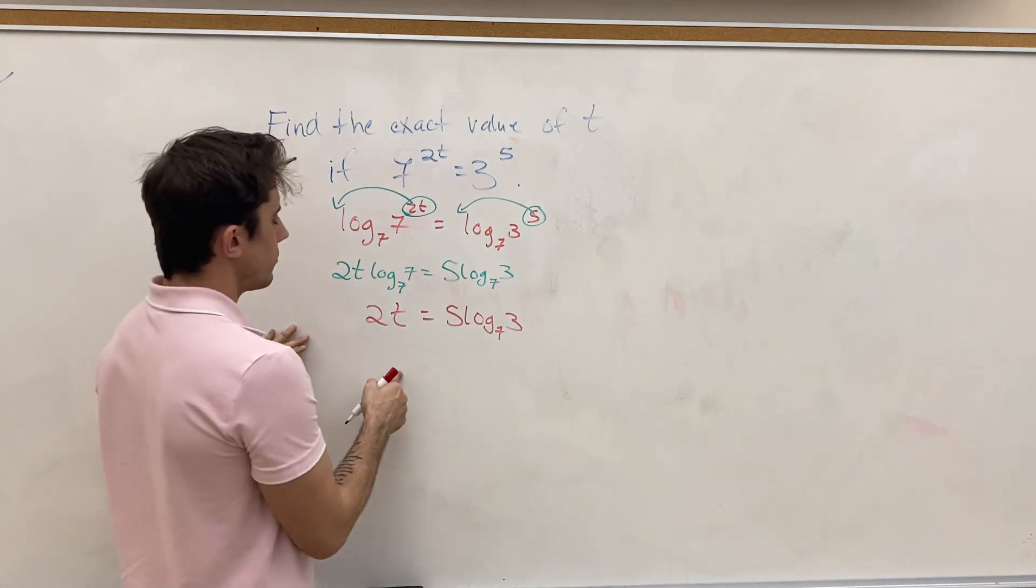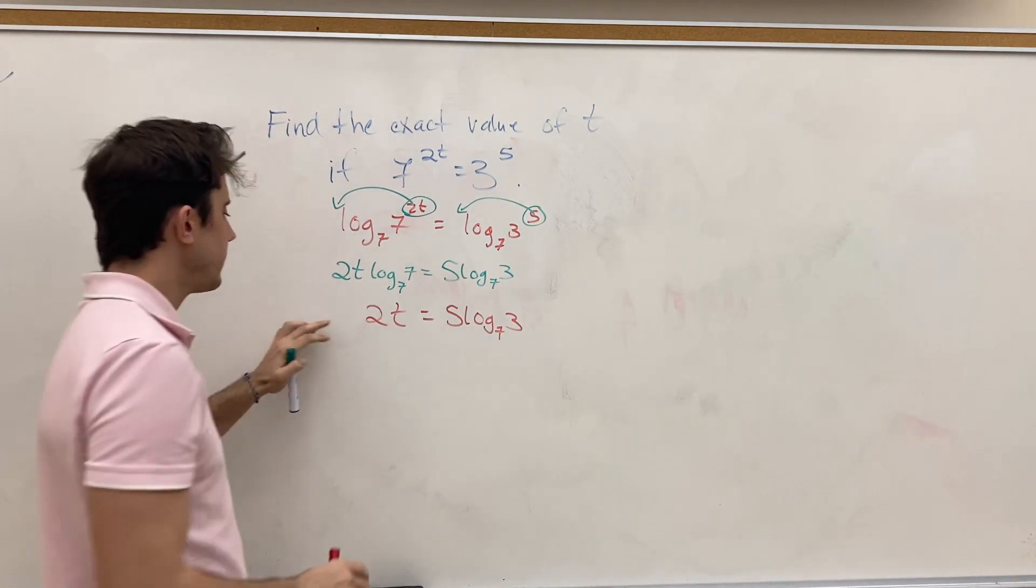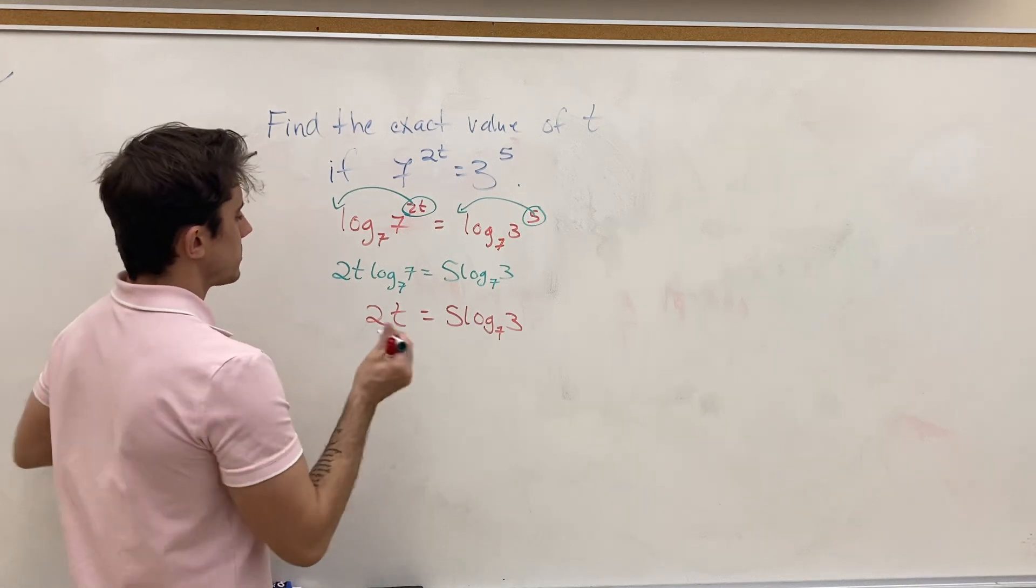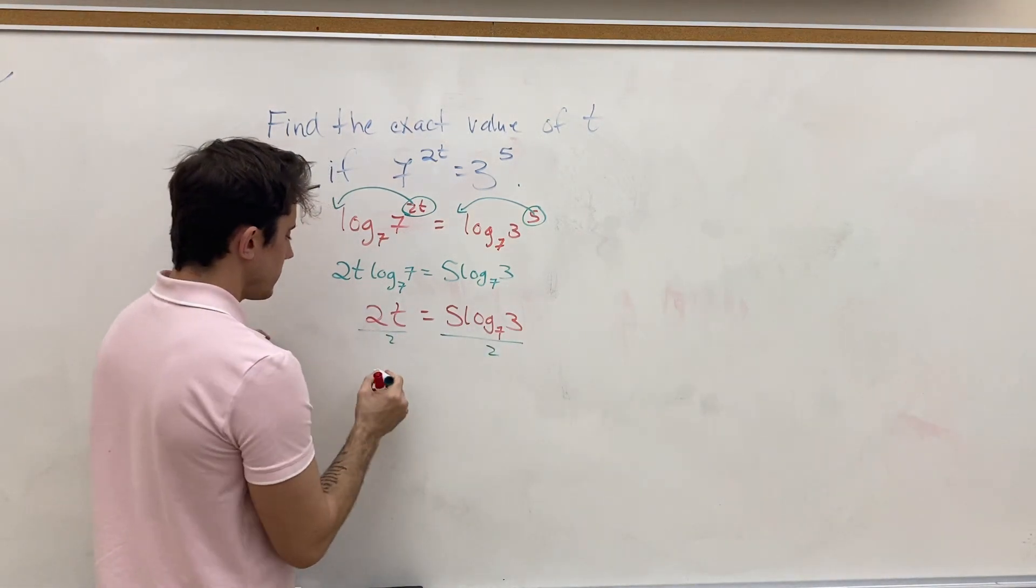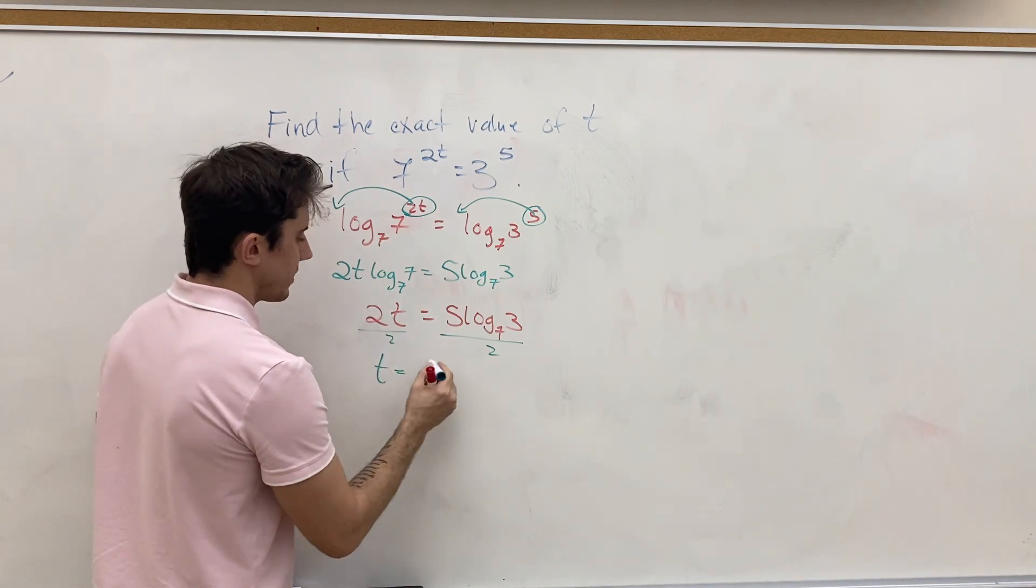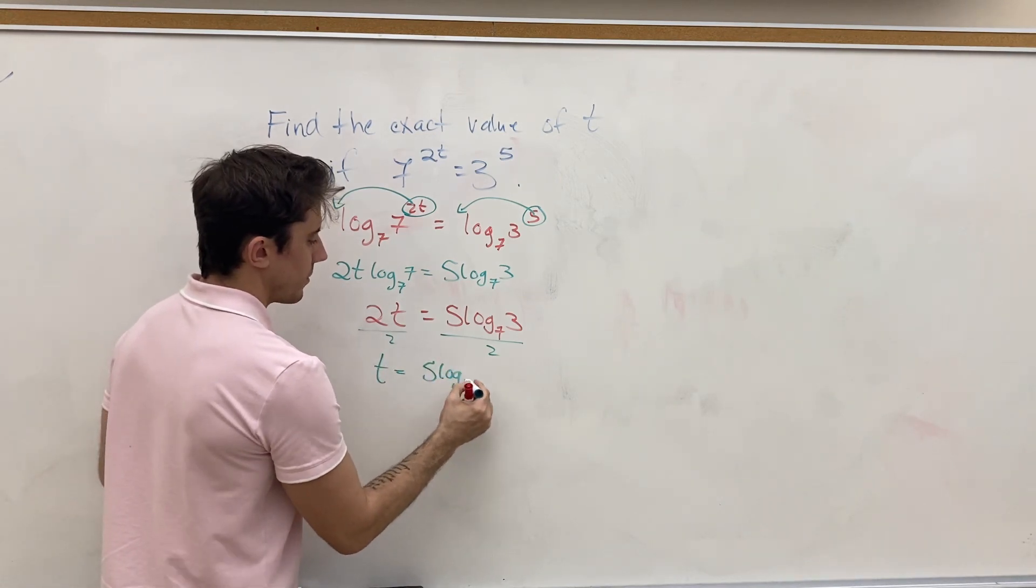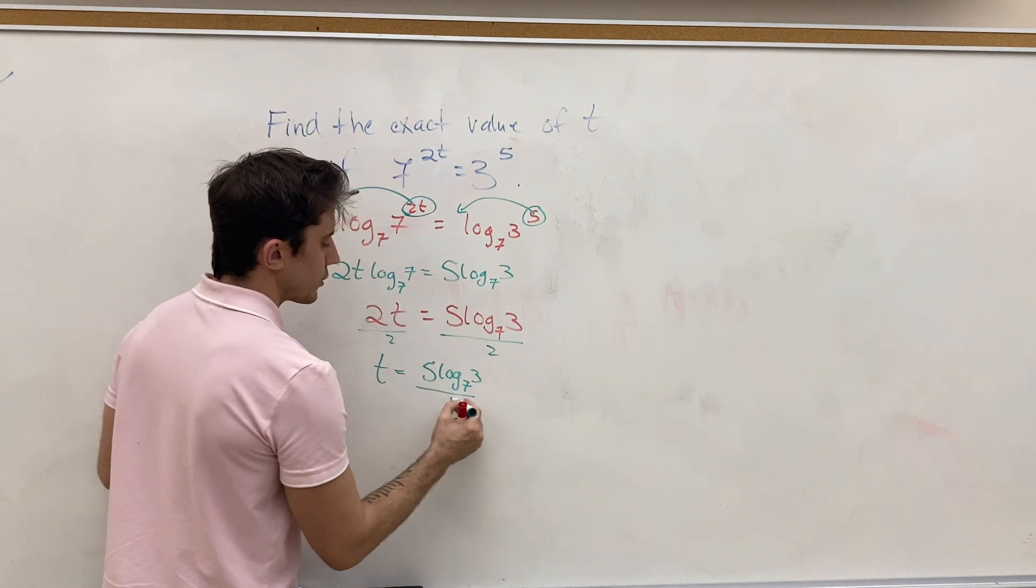And now, what we can do is, we want to solve for t, so let's go ahead and divide by 2. So, t ends up being 5 log base 7 of 3 over 2.